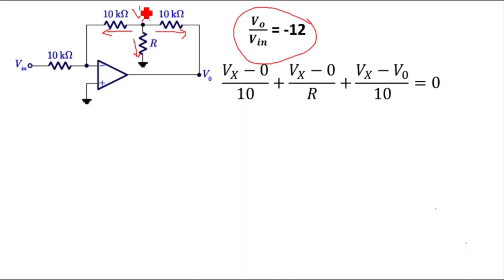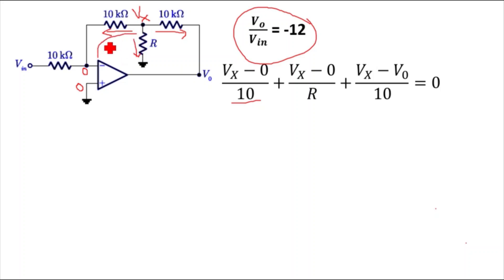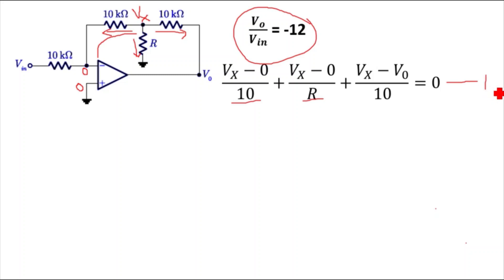The summation of currents at any node — incoming or outgoing — should be equal to zero. The potential at node X is VX. The plus terminal is grounded, so it has zero potential, and due to virtual ground this zero potential appears at the minus terminal as well. So the first term is (VX minus 0) divided by 10K, the second term is (VX minus 0) divided by R, and the third term is again (VX minus 0) divided by R. This is equation number one.